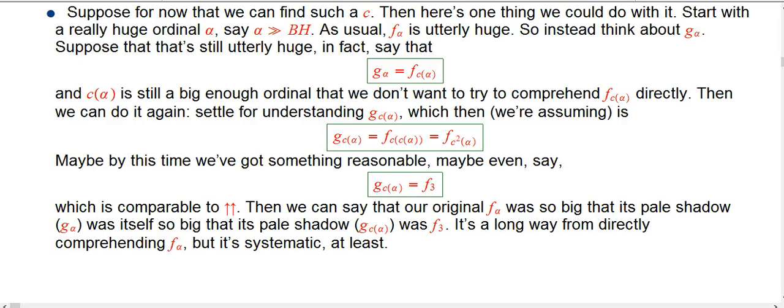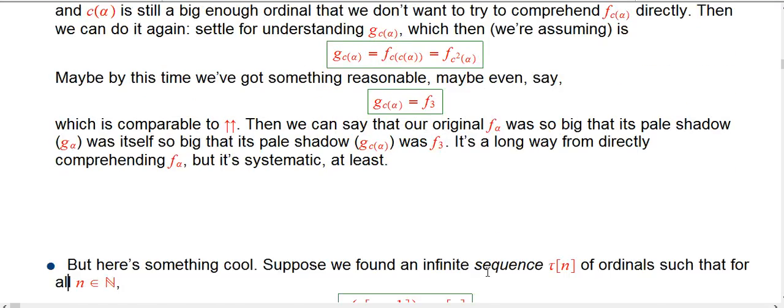We're assuming we have a collapsing operation that relates g of alpha to f of the collapsed version of alpha. Let me show you something really cool about that. It's a good thing to have that relates the real thing, the f's, and the shadow's g, and you can do it multiple times.